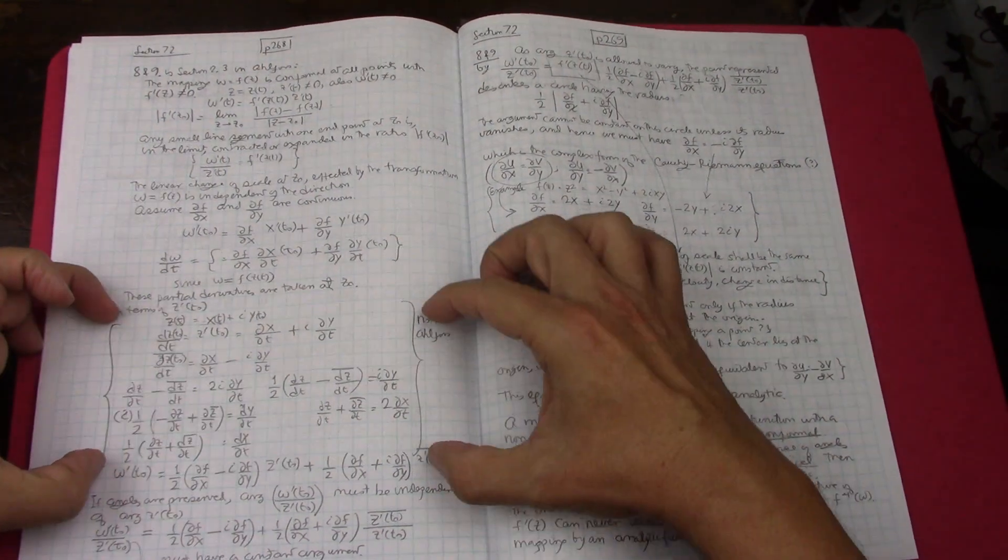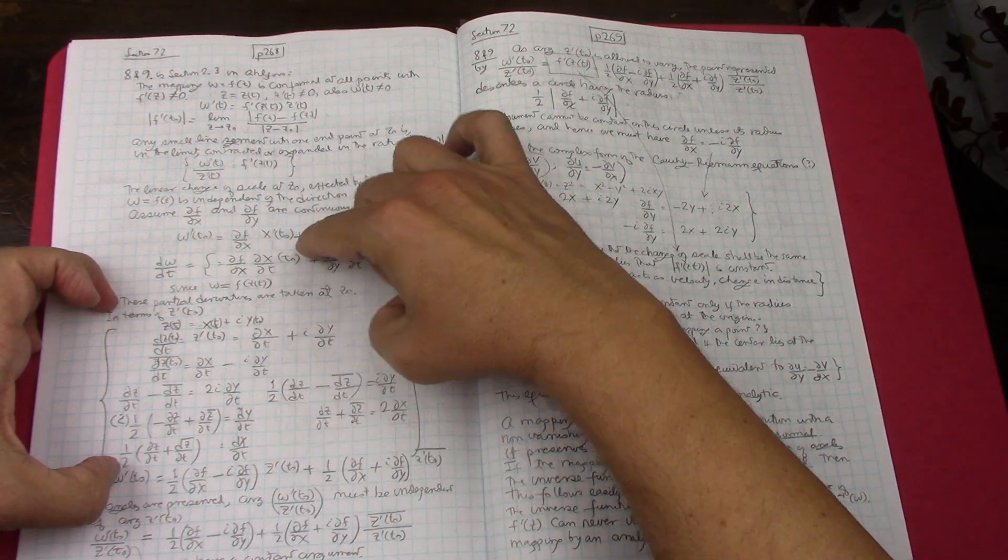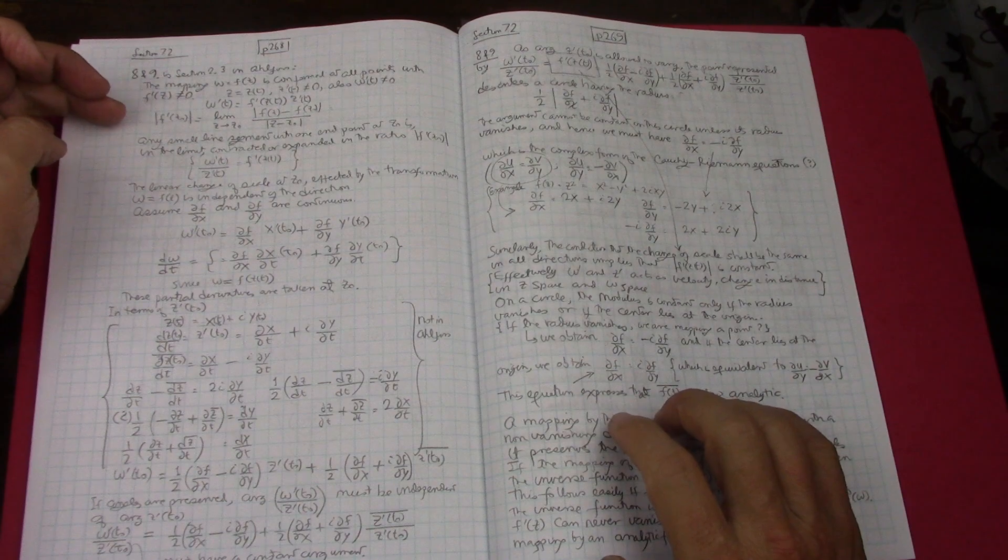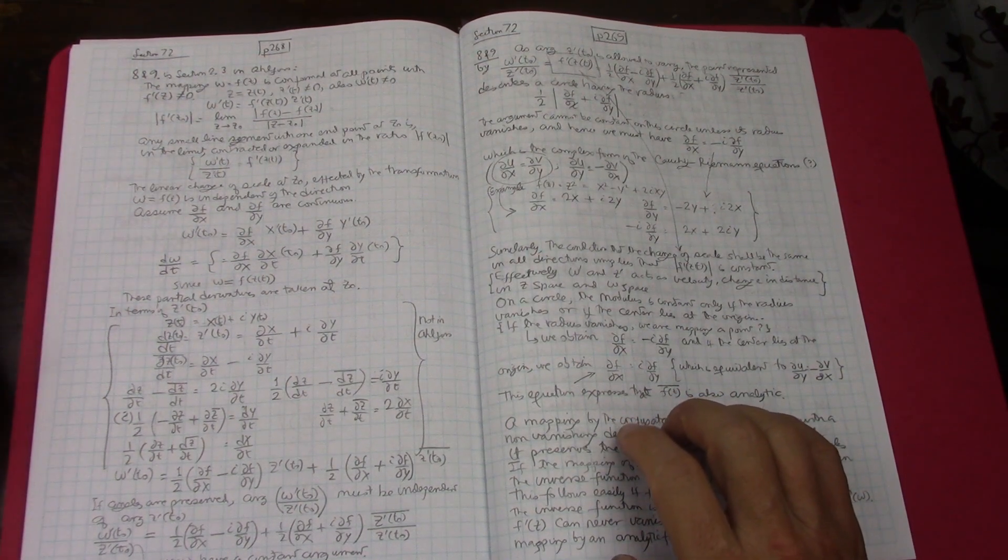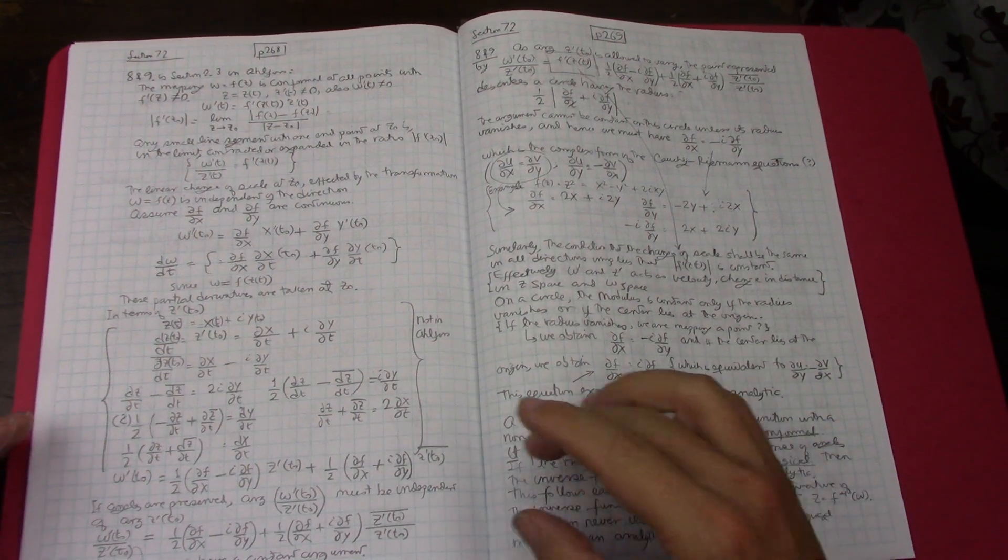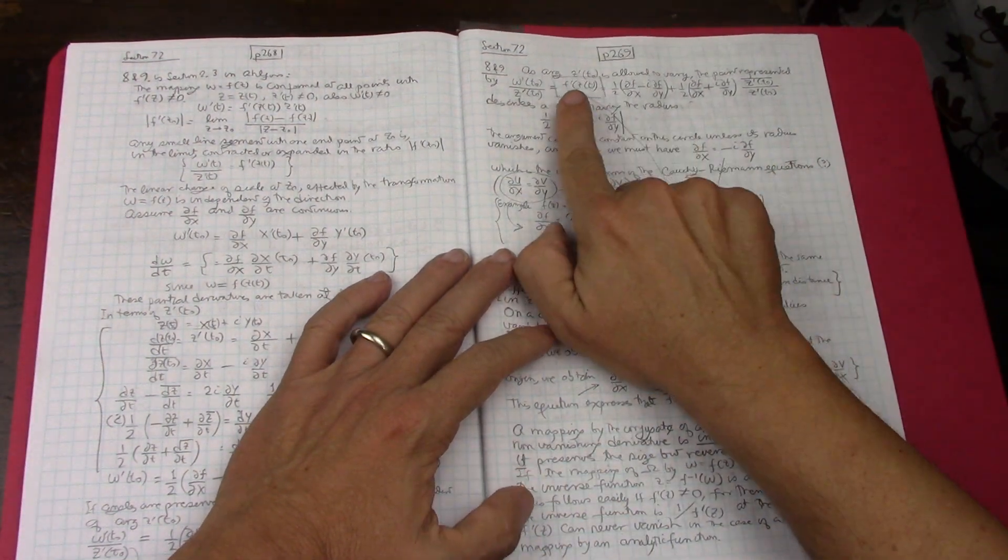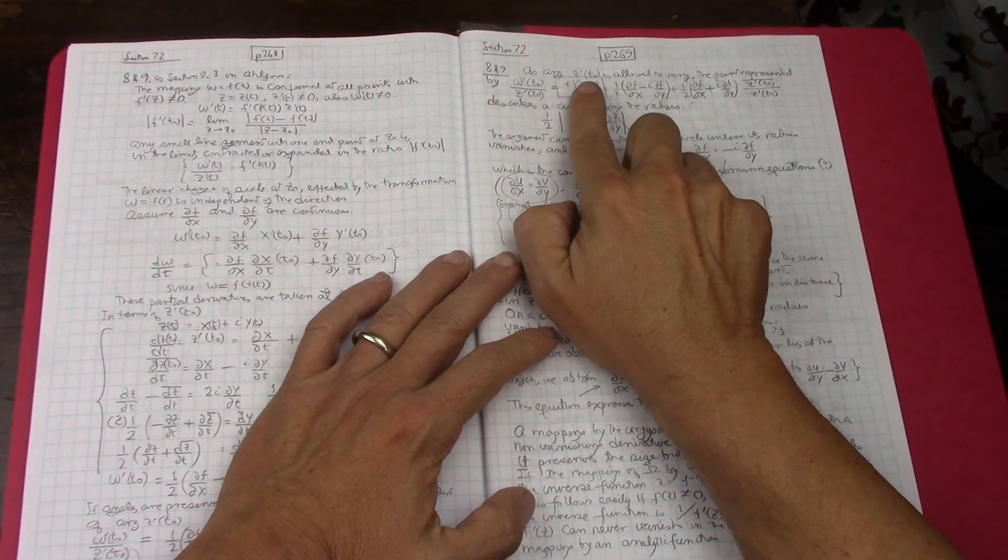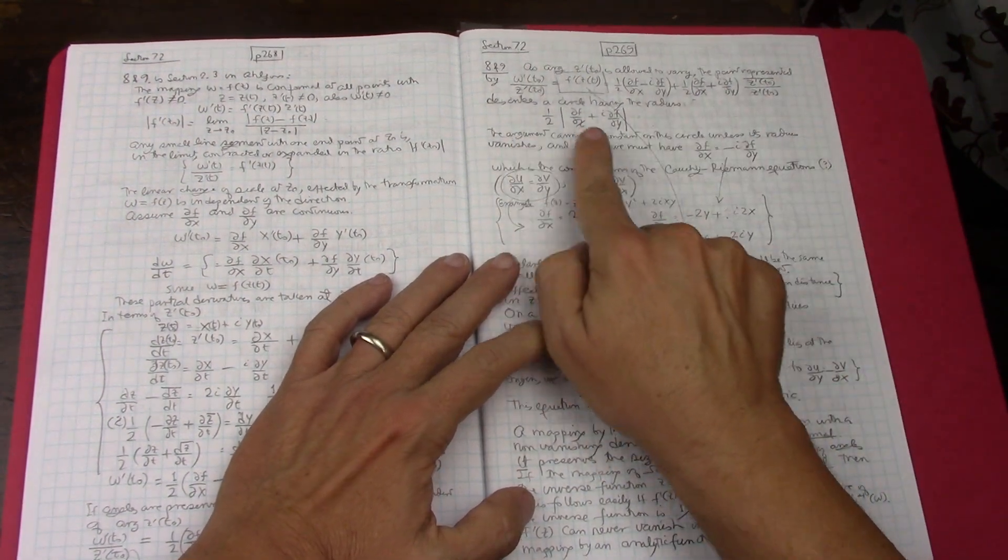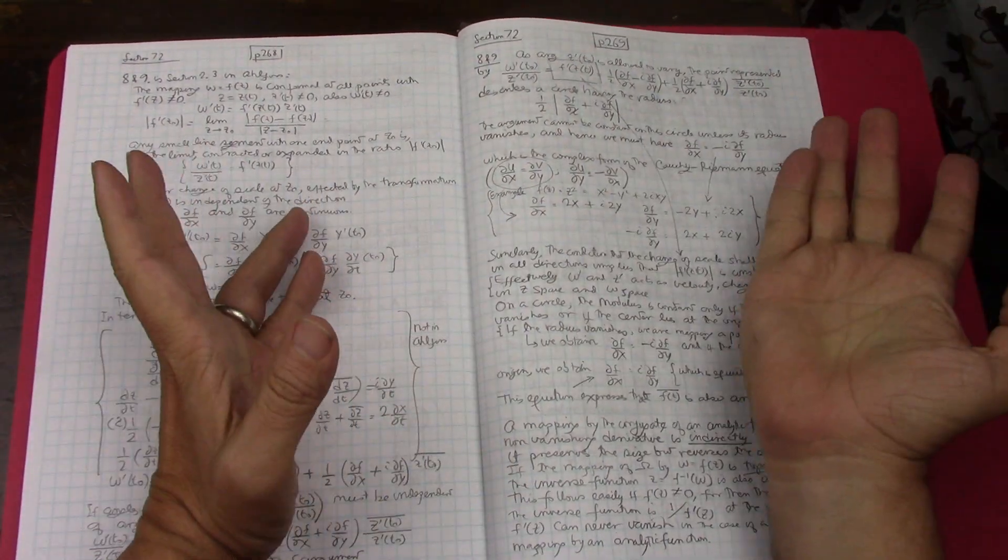Actually is this entire proof for problems 8 and 9 in gory detail and truly in all its glory and so yes and I was even able to fill in the calculations for the missing steps in Ahlfors which I felt very proud of but sure enough you you set up these these operators and eventually you get a formula that is right here so the arg of z prime t zero varies and it describes a circle having this radius I could have never figured this out.